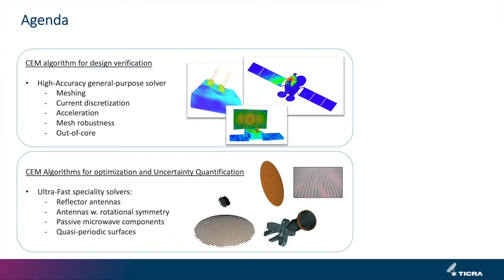In the first half I will talk about a CEM algorithm for design verification — a high accuracy general purpose integral equation solver. We'll go through meshing, current discretization, acceleration, mesh robustness, and out-of-core solutions. In the last half I will talk about CEM algorithms for optimization and uncertainty quantification, requiring ultra-fast specialty solvers for reflector antennas, antennas with rotational symmetry, passive microwave components, and quasi-periodic surfaces.